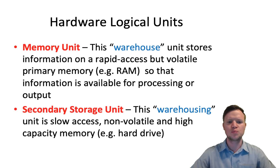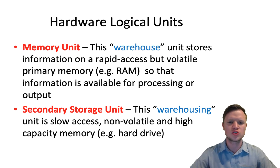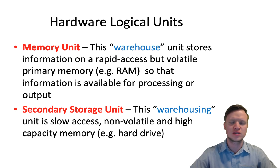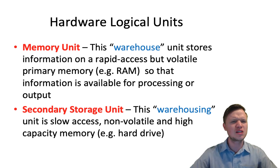A computer also has a memory unit. The memory unit is used to store data for a given task at hand — it's not long-term storage, it's short-term storage. It's where you store the data you want to work with at this current moment. It's rapid and fast, but it's volatile. Volatile means that when the power goes off, the memory or the data is lost.